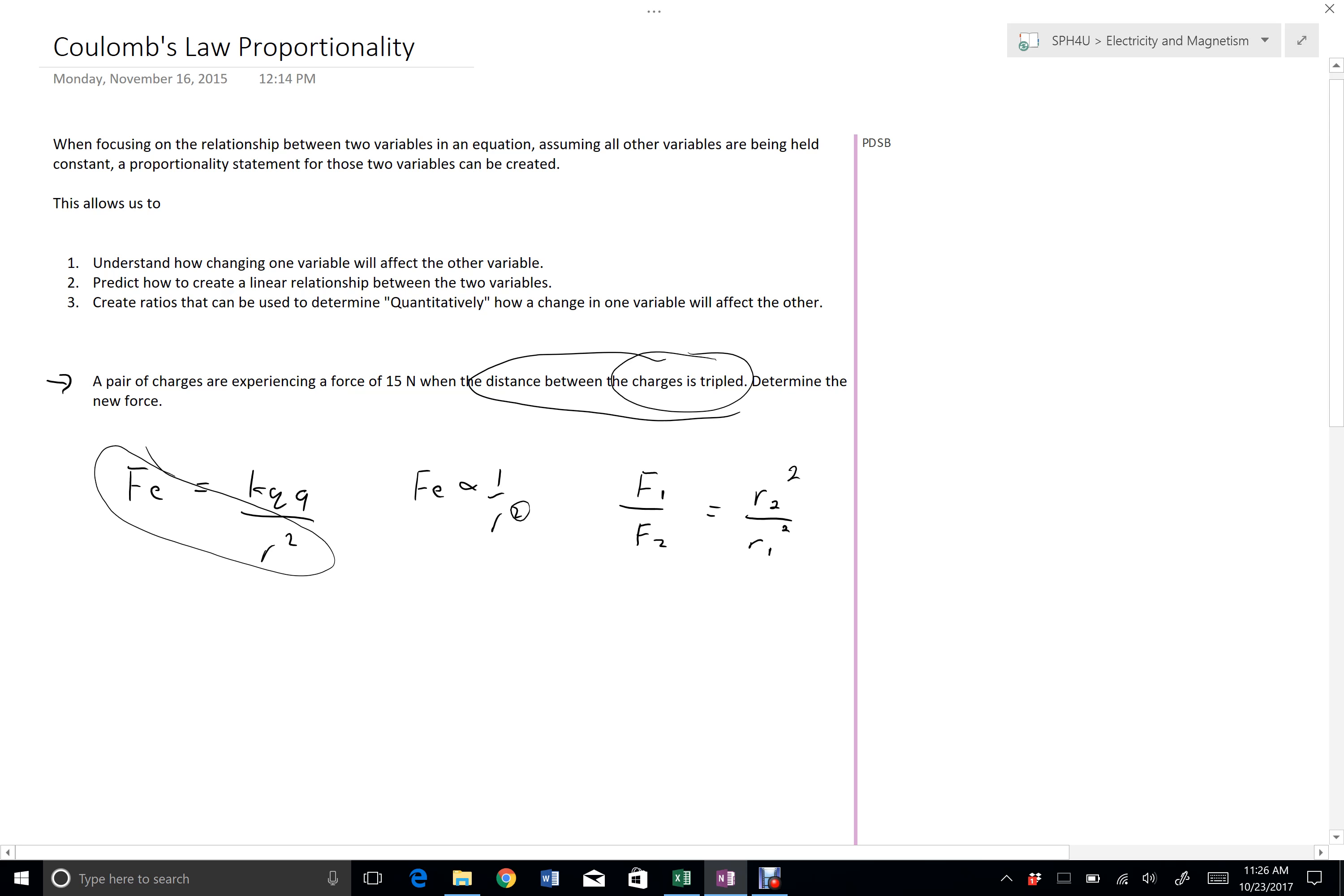So I'm saying my original force was 15 Newtons. I don't know my final force. And my radius is tripled. That means R2 is equal to 3 times R1. So I can substitute that. Always substitute in brackets so that you don't forget to square that number. And what I can see on my right-hand side here is that I get 9 R1 squared over R1 squared.